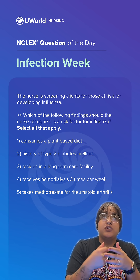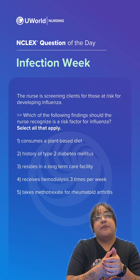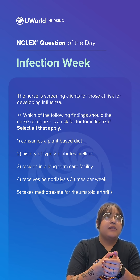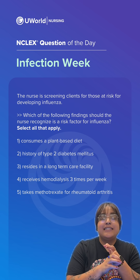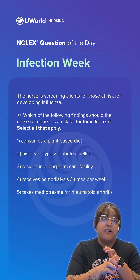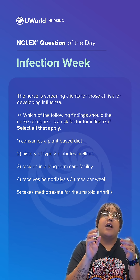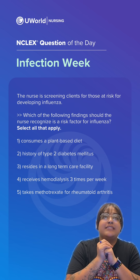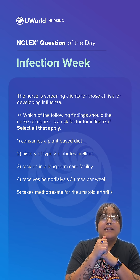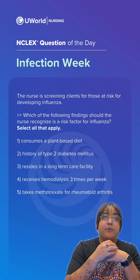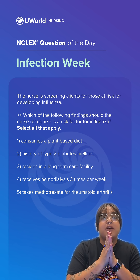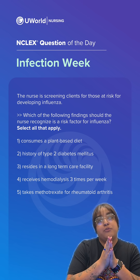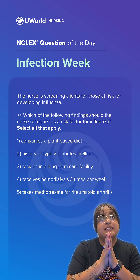That leaves option two: history of type 2 diabetes mellitus. Option three: resides in a long-term care facility. Option four: receives hemodialysis three times per week. And option five: takes methotrexate for rheumatoid arthritis.